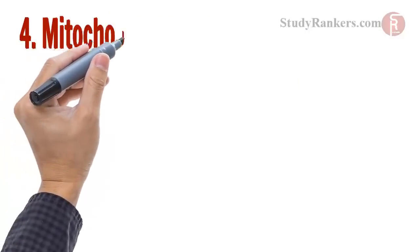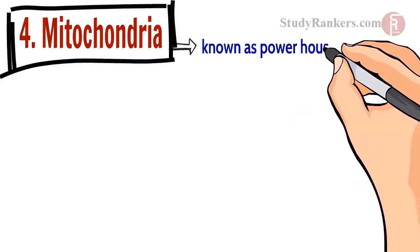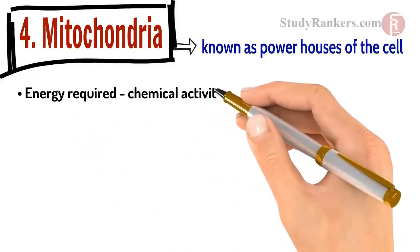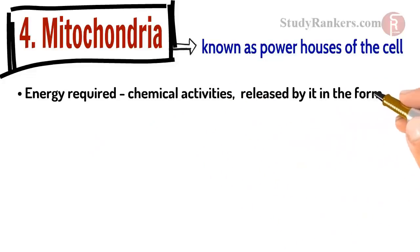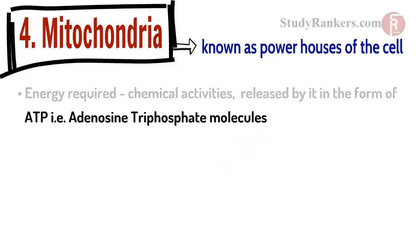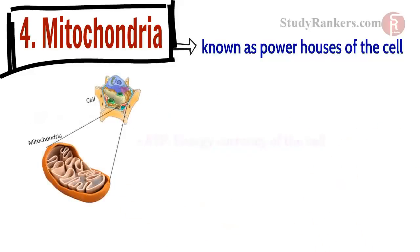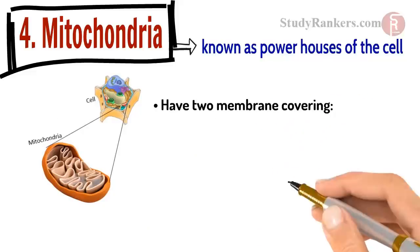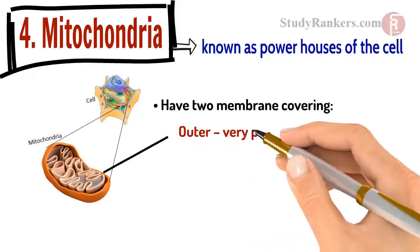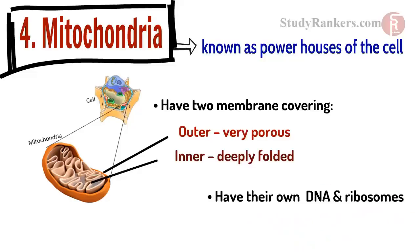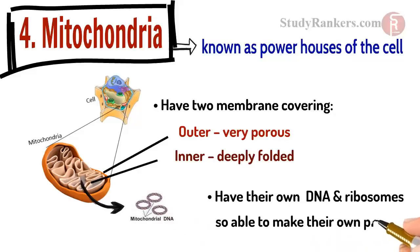Now we will talk about mitochondria. Mitochondria are known as the powerhouses of the cell. The energy required for various chemical activities needed for life is released by mitochondria in the form of ATP molecules. ATP is known as the energy currency of the cell. Mitochondria have two membrane coverings instead of just one. The outer membrane is very porous while the inner membrane is deeply folded. They have their own DNA and ribosomes; therefore, mitochondria are able to make some of their own proteins.